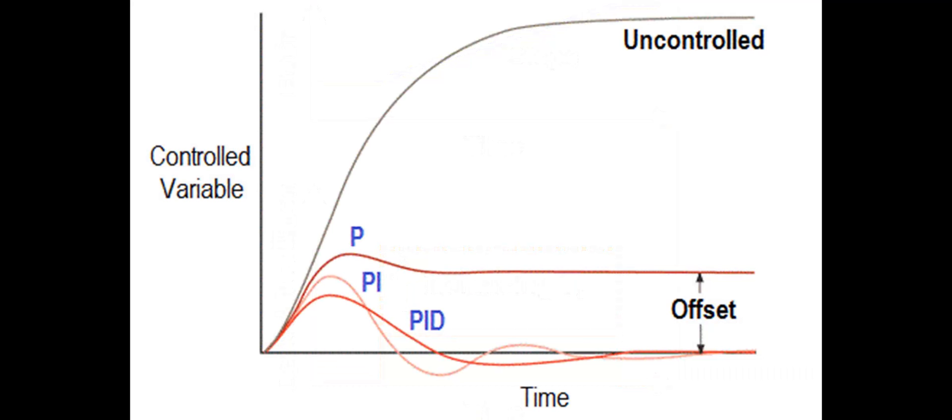As with integral control, the derivative signal can be generated by a simple op-amp circuit. This circuit is called a differentiator.